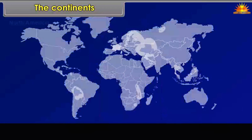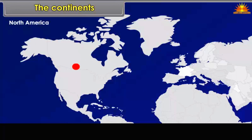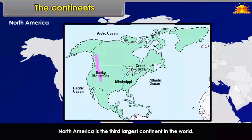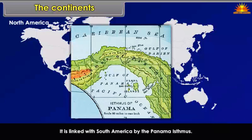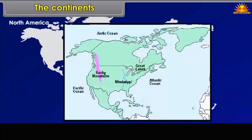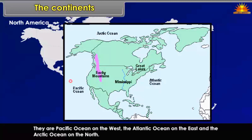North America is the third largest continent in the world. It is linked with South America by the Panama Isthmus. It lies completely in the northern and western hemisphere. Three oceans surround it: the Pacific Ocean on the west, the Atlantic Ocean on the east, and the Arctic Ocean on the north.